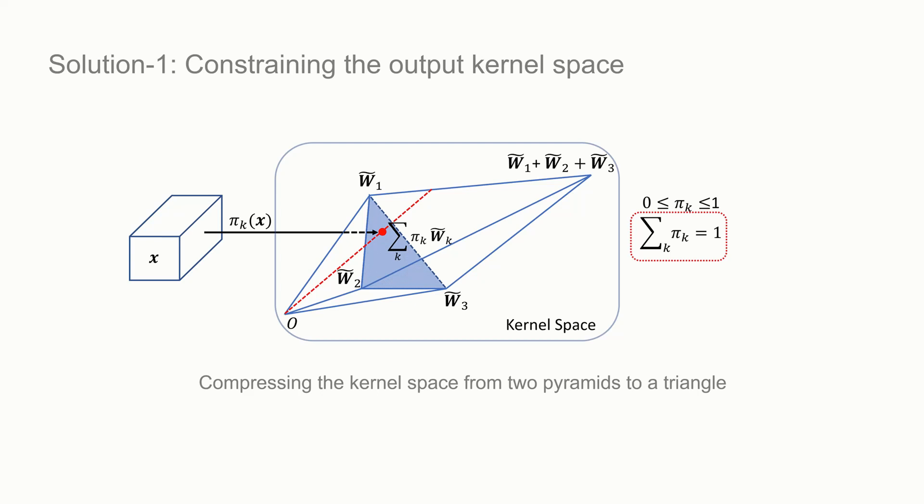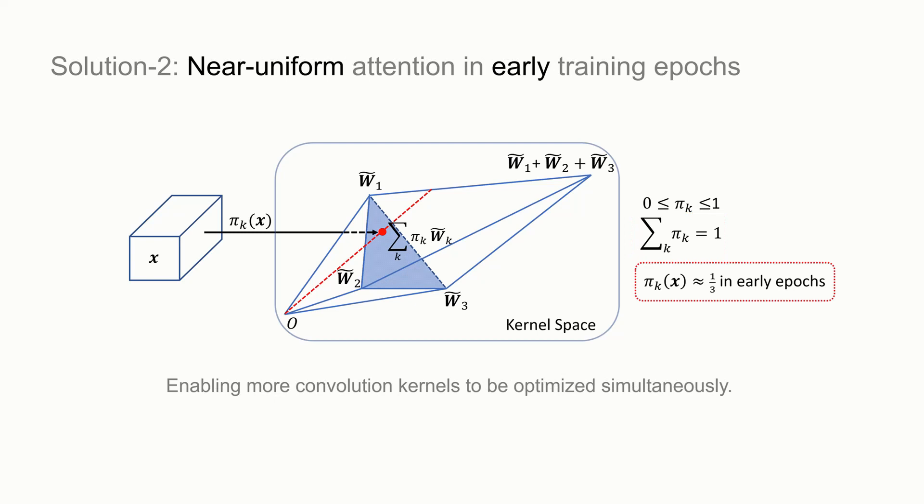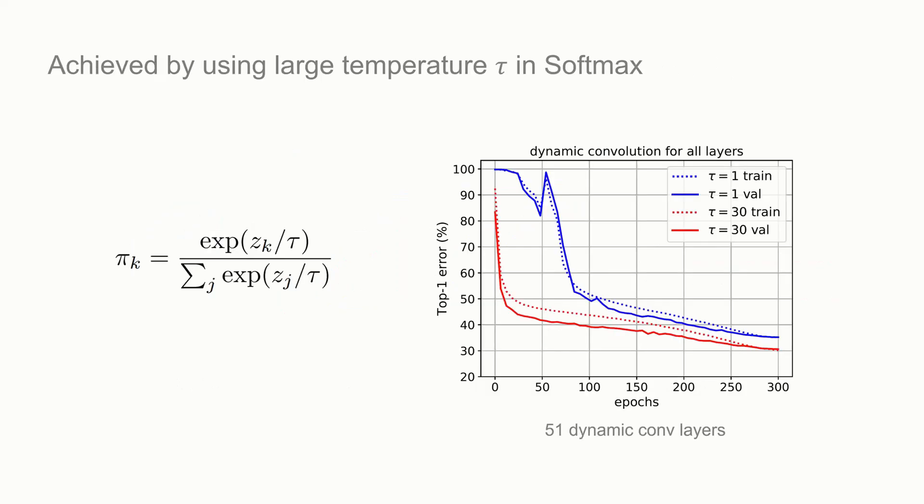Softmax is a natural choice for these constraints. However, softmax results in near one-hot attention. This slows down the convergence at early training epochs, as it is hard for multiple kernels to be optimized simultaneously. We need a solution to make attention near uniform in the early training epochs. This can be achieved by using a large temperature τ in softmax.